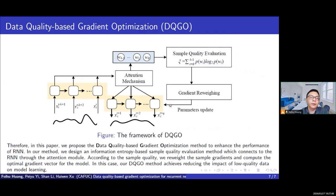So, in this paper, we propose the data-quality-based gradient optimization method to enhance the performance of the current neural network. In our method, we designed an information-entropy-based sample quality evaluation method, which connects to the model through the attention model. According to the sample quality, we evaluate the sample gradient and compute the optimal gradient vector for the model. In this case, our DQG method achieves reducing the impact of low-quality data on modern learning.